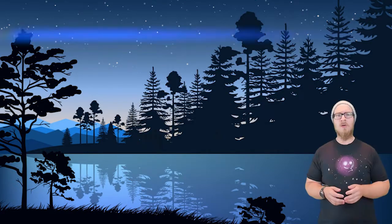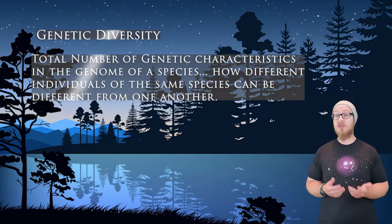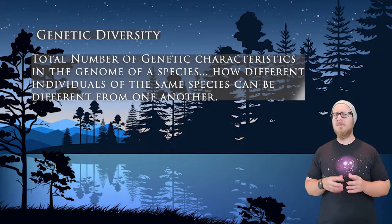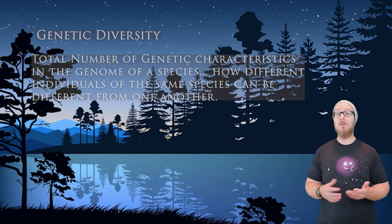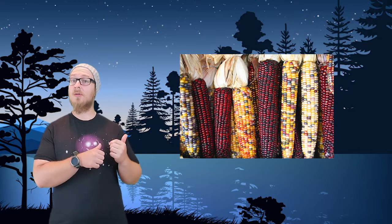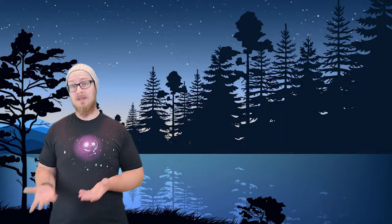One scale of biodiversity is genetic diversity, or the total number of genetic characteristics in the genome of a species. In other words, it looks at how different members of the same population can be from each other. The different colors in this kernel of corn are the result of genetic diversity.